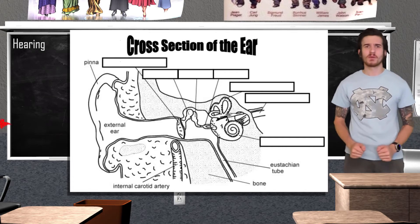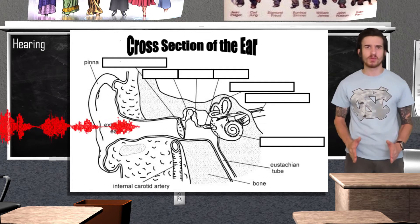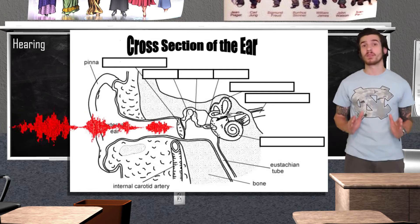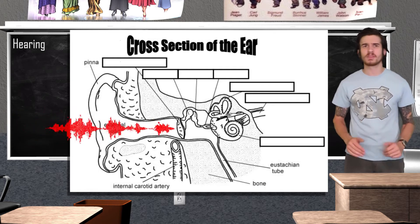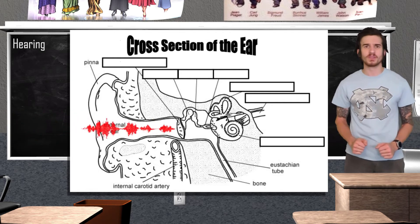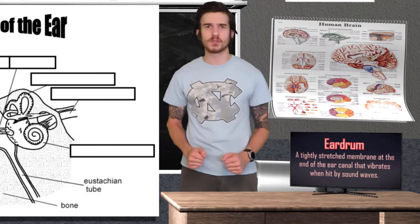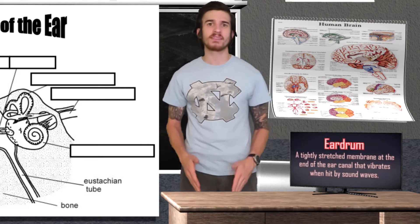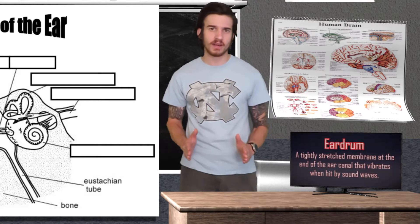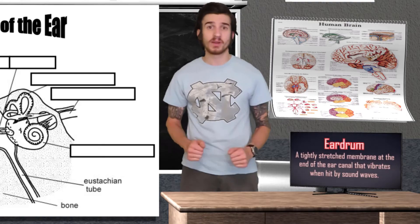Sound waves are first going to be collected by the outer ear. Traveling through the ear canal, the sound waves will eventually reach the eardrum. The eardrum is going to be a tightly stretched membrane at the end of the ear canal that's going to vibrate when hit by sound waves.